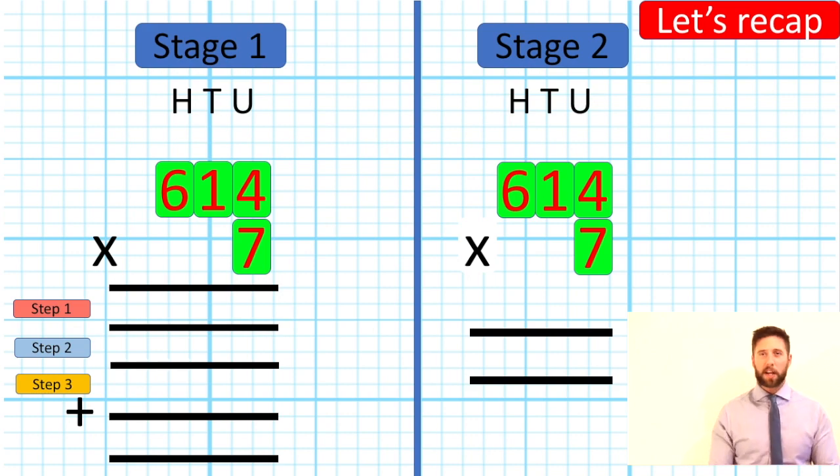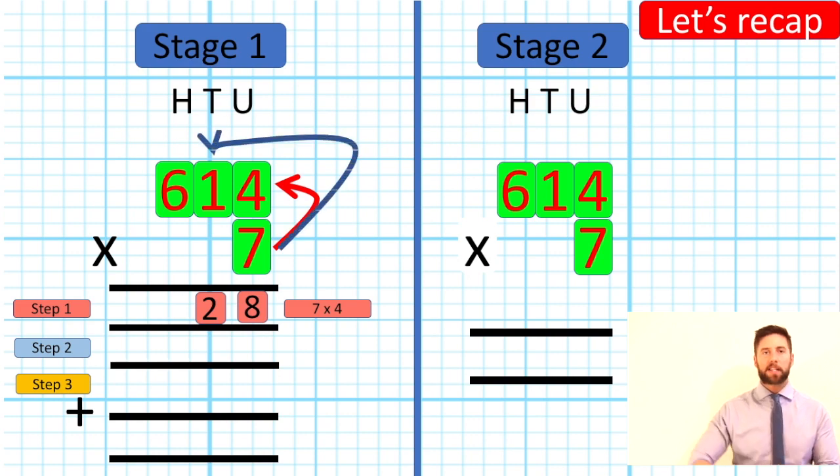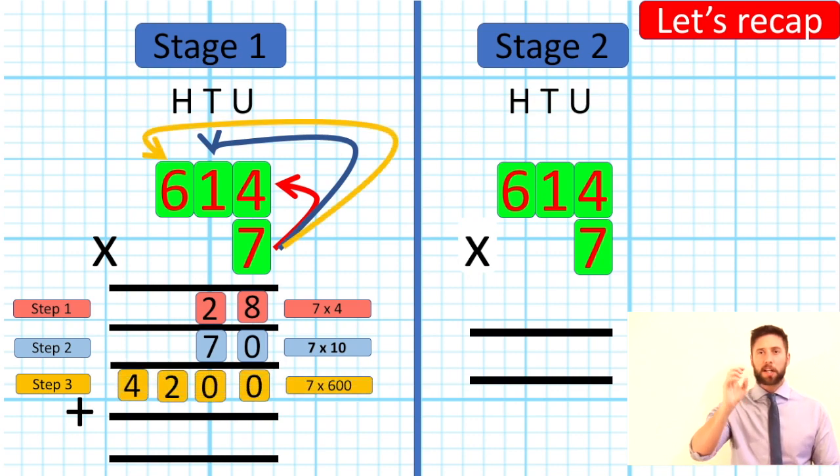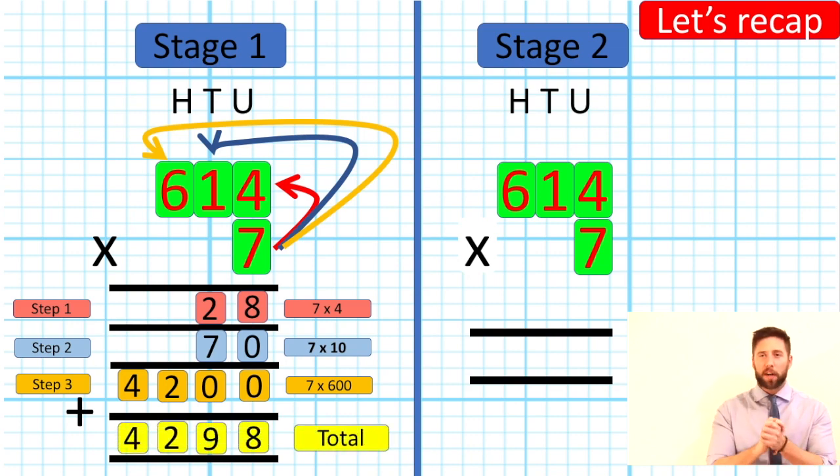After I've laid everything out perfectly, I can begin. I always start with my smallest value, which in this case is 7 times 4. Put my answer in here, 28. Then I'm going to put 7 times 10. Get that answer in there, 70. And then I'm going to do my 7 times 600. Put that in there, 4,200. Once I've done that, I can add it all together. Give me a grand total: 4,298.